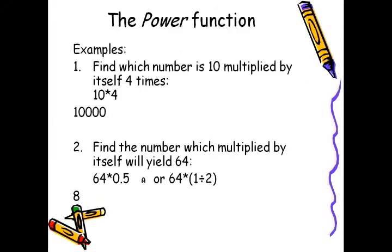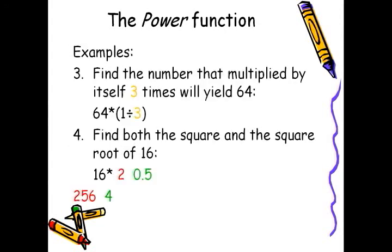Here's an example. You want to find which number is 10 multiplied by itself 4 times — so you would say 10 star 4, which is 10,000. If you want to find the number which multiplied by itself will yield 64 — in other words, the square root of 64 — you would say 64 star 0.5. Another one: if you want to find the number which multiplied by itself 3 times will yield 64, you would say 64 star 1 divided by 3. And if you wanted to find the square and the square root of 16, you would say 16 star 2 for the square, and 16 star 0.5 for the square root — here you have 16 star applied to a list of numbers.